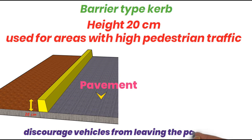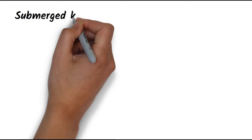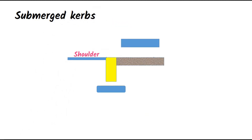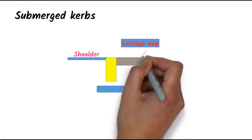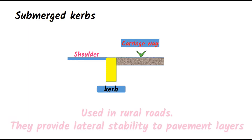Next is submerged curbs. They are used in rural roads where the carriageway and shoulder are on the same level, with the curb submerged. They provide lateral stability to the carriageway or pavement layers.